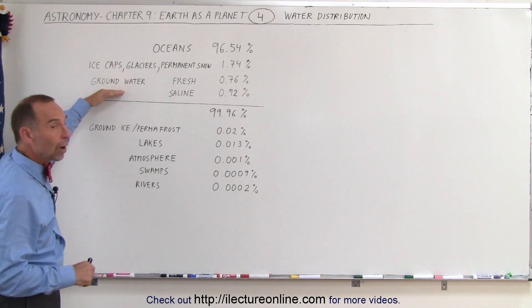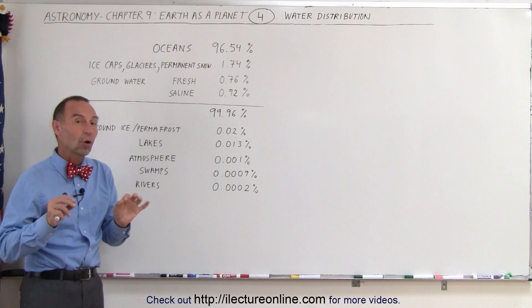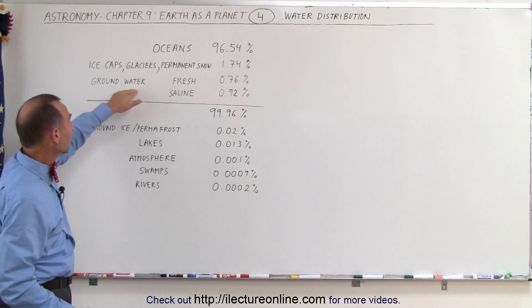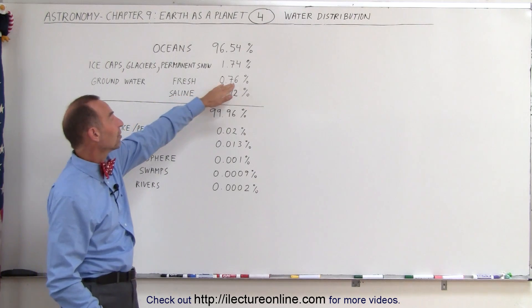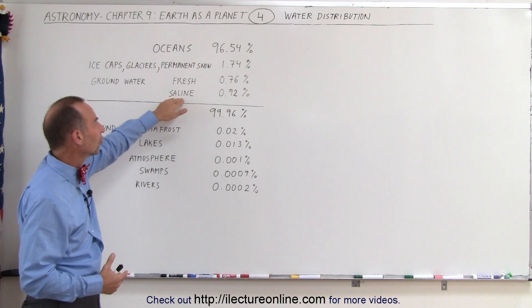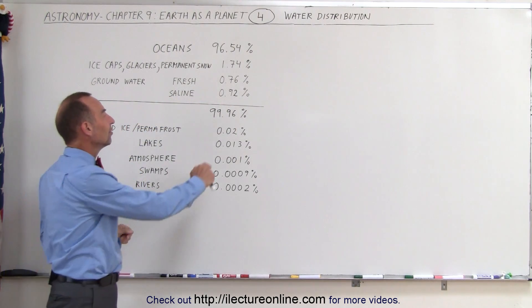If we add to that the groundwater, the water that's below the ground—and yes indeed there are other planets where water is below the ground like on Mars—the freshwater of the groundwater is another 0.76% and the saline water, water mixed with other minerals and salts, is 0.92%.